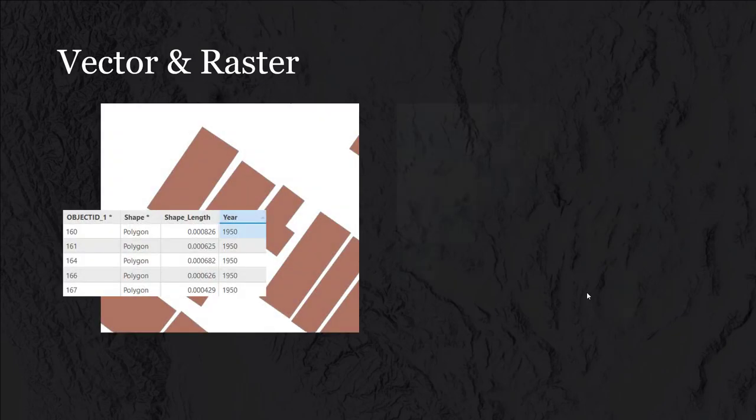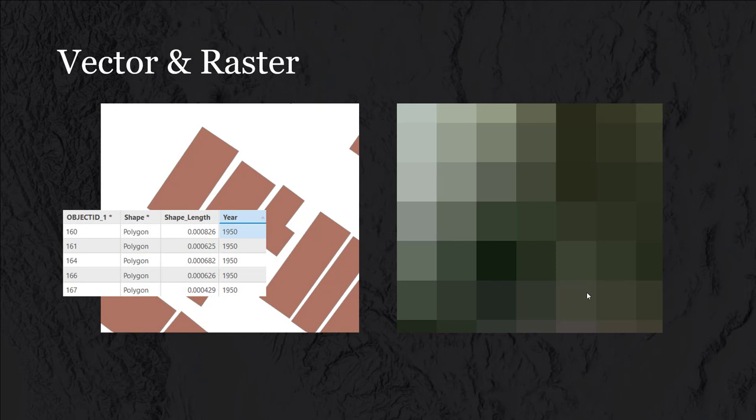Vector versus raster. Data in a GIS is typically captured in one of these two formats. Vector data — shown on the left — you can think of as points, lines, and polygons. We're really capturing a point of a location, an XY coordinate, which can be thought of as a vertex or node. For polygons, the computer isn't storing the actual locations of all those lines — it's capturing just the vertices, each of those corners or location where we need to change the angle of that building. The computer stores the XY location of each of those points, along with any attributes.